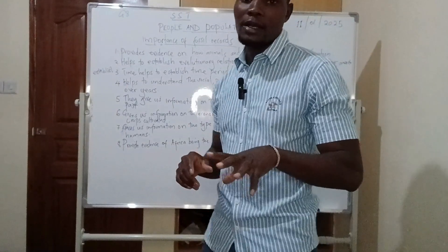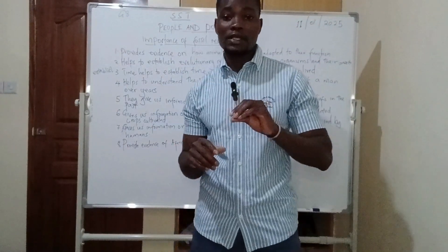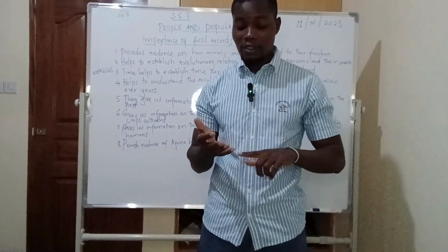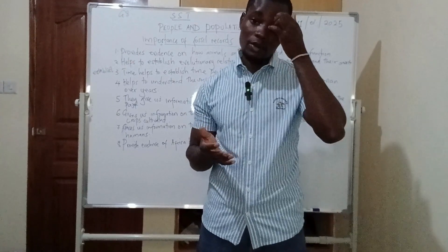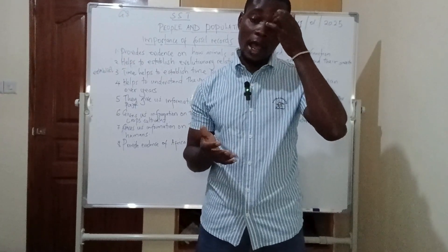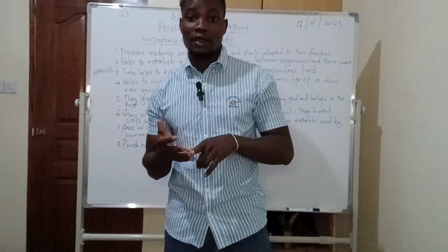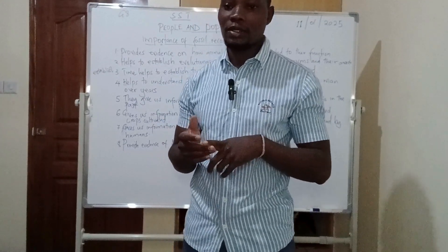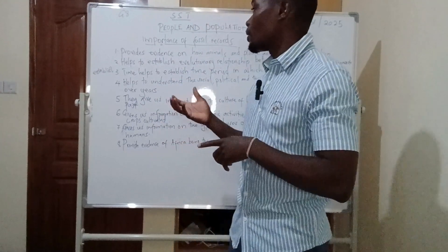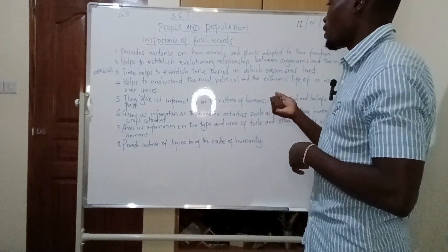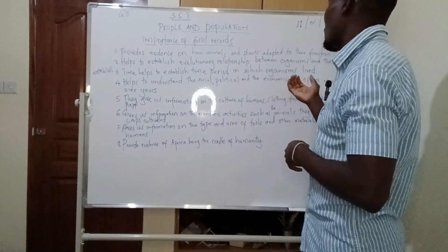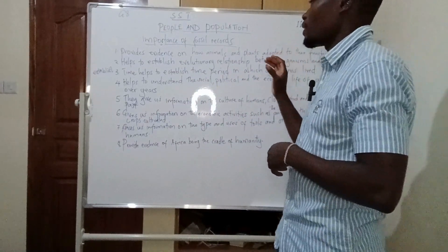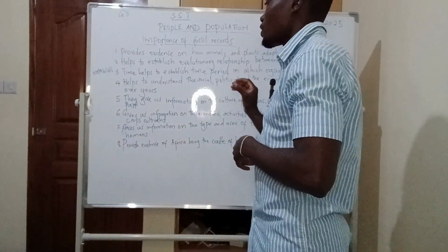Remember, I explained last time the processes of evolution. We said there's a process called mutation, there's a process called adaptation, and there's a process called natural selection. How did animals evolve and adapt to their environment? You can only find that when you look at the fossil records.